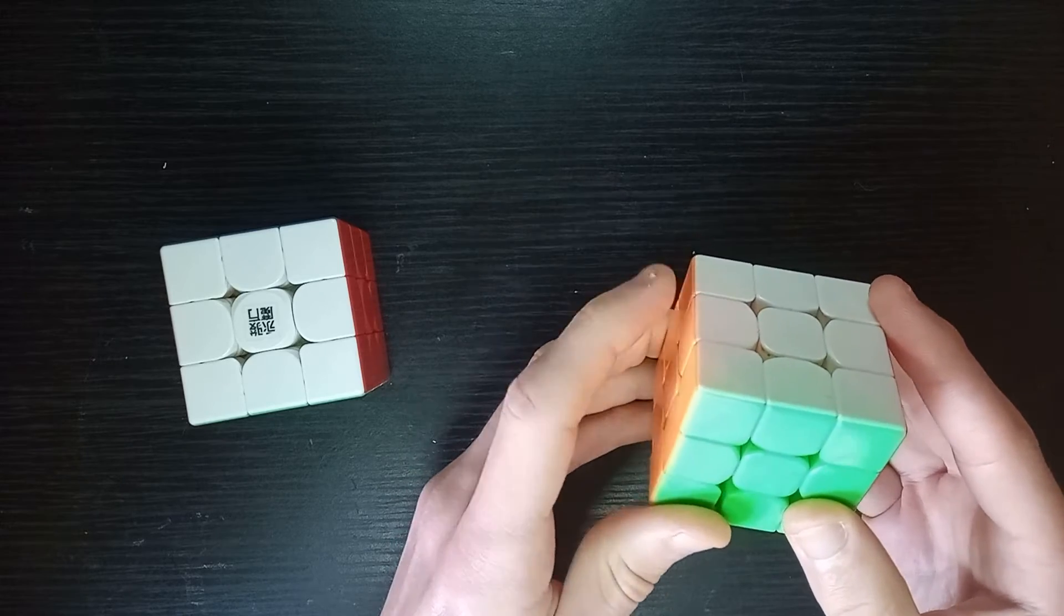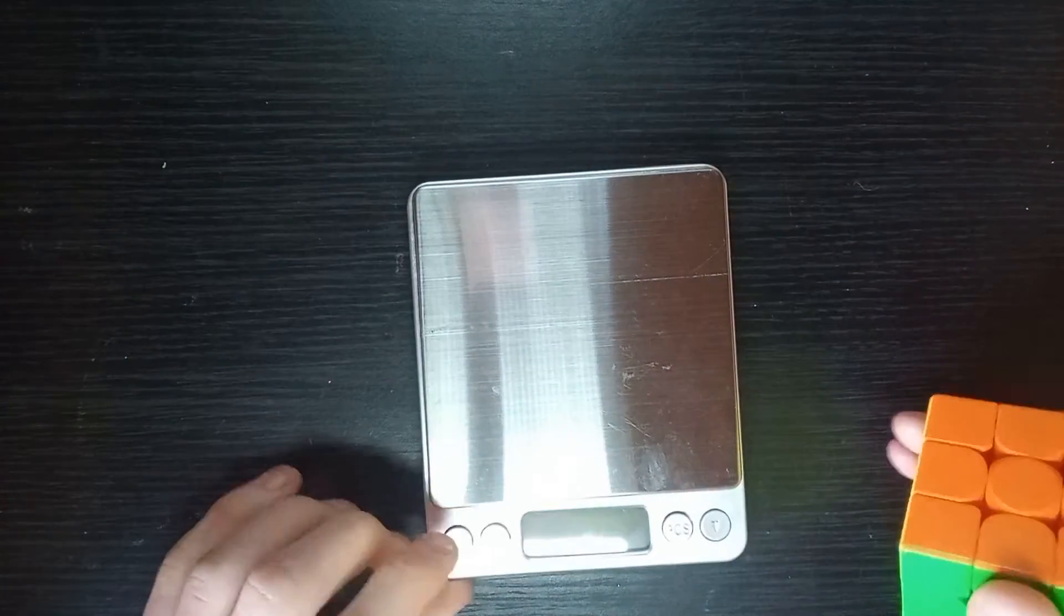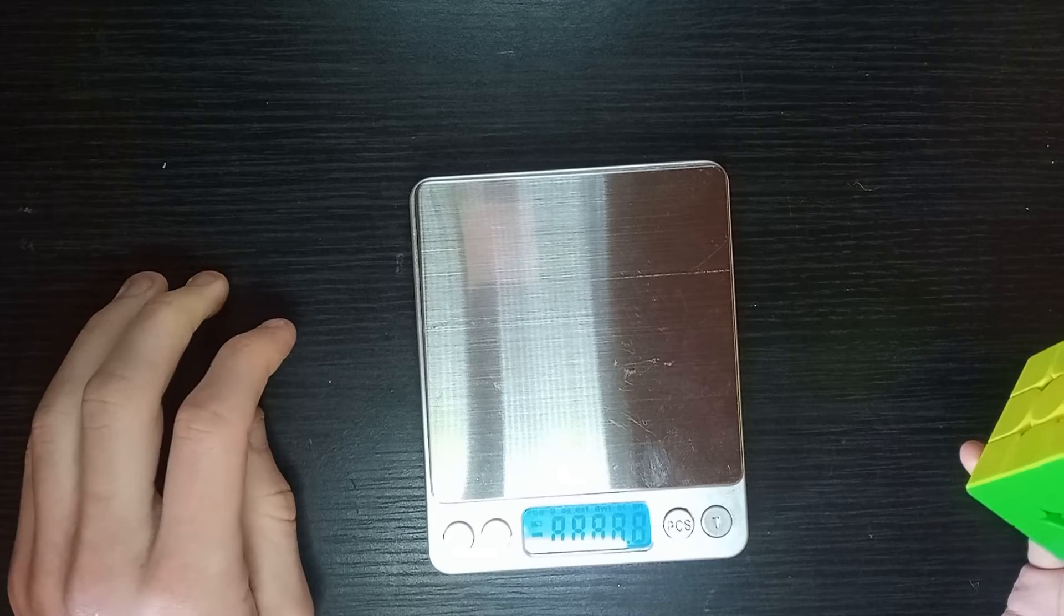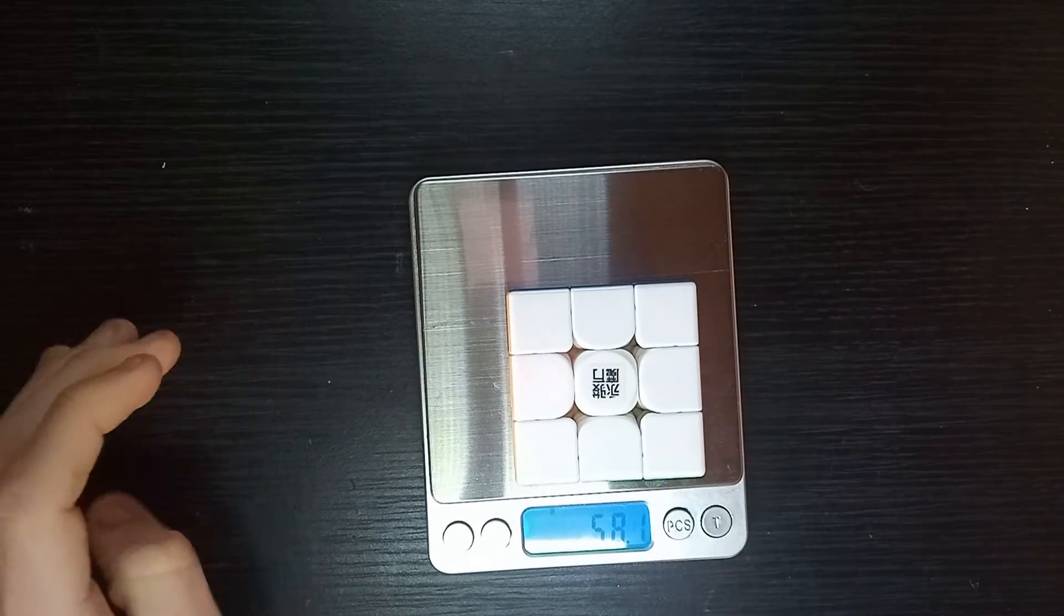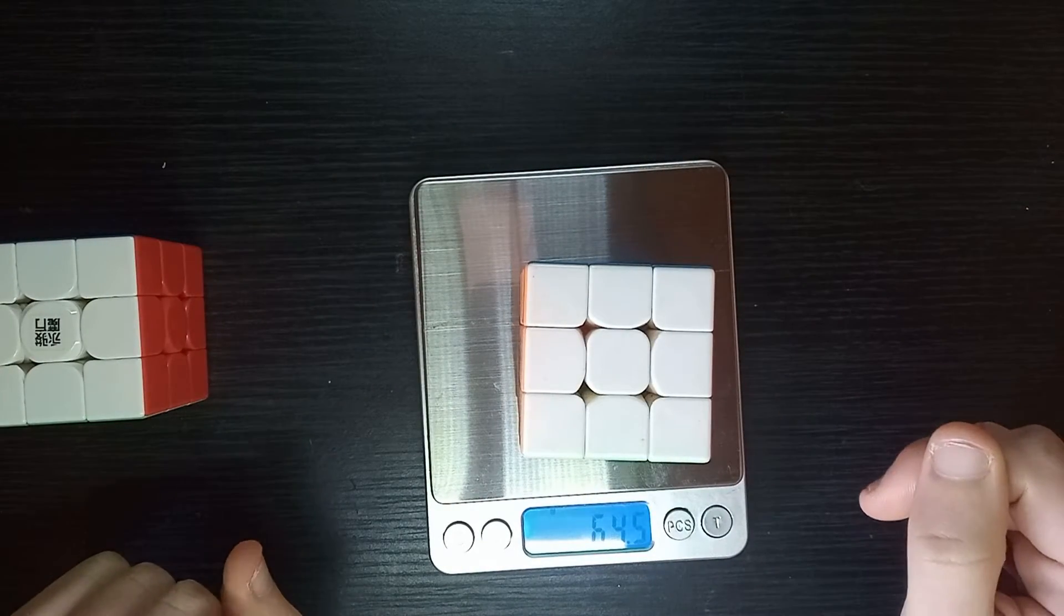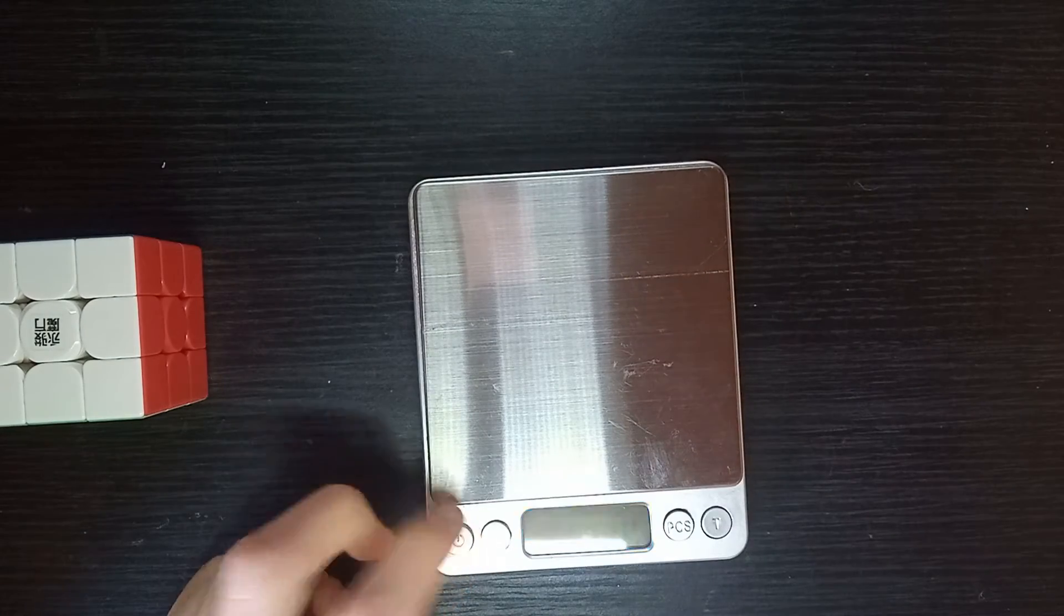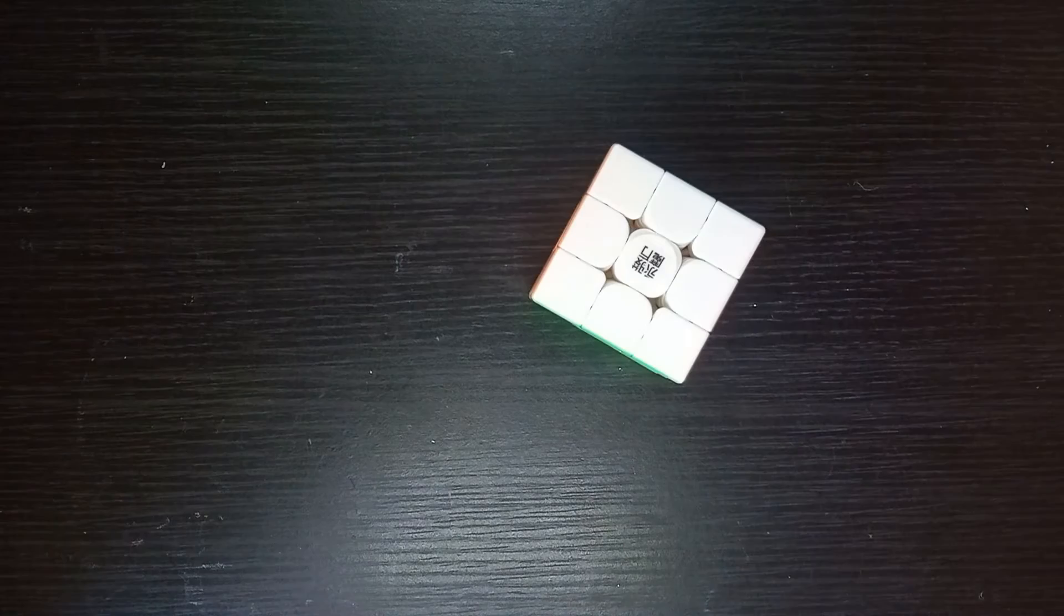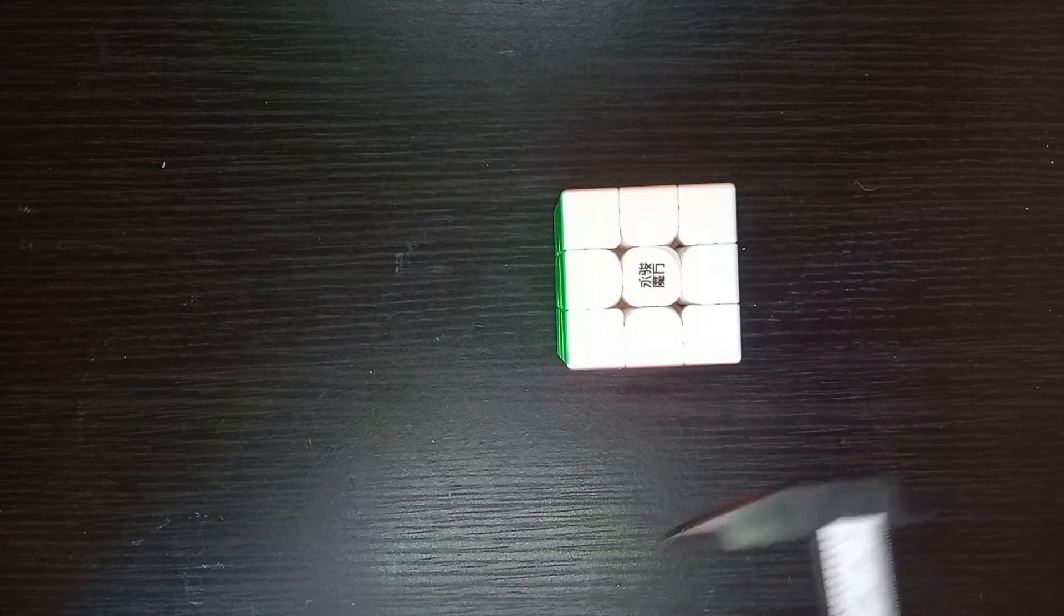However, right down to 30mm, the interesting thing is that this 50mm cube, despite being magnetic, is only 58.1 grams, whereas this is 64.54 grams. So I don't know how that's happened. Clearly, they've done something well in reducing the size.